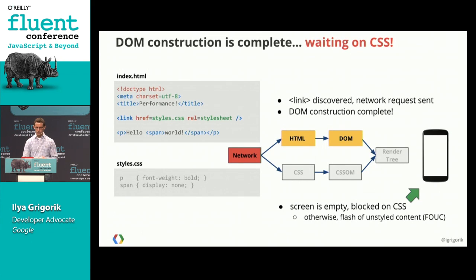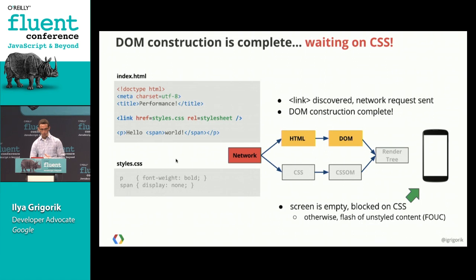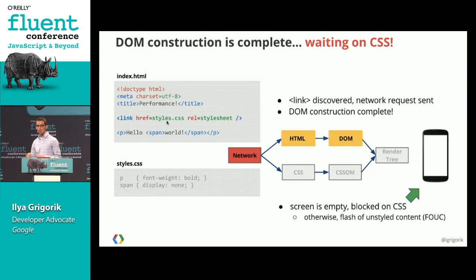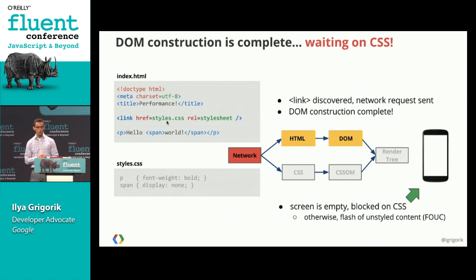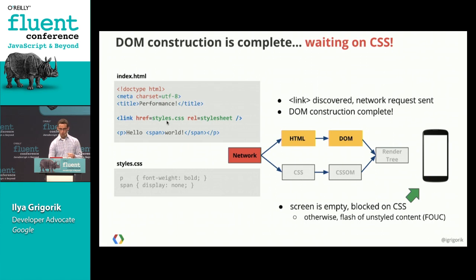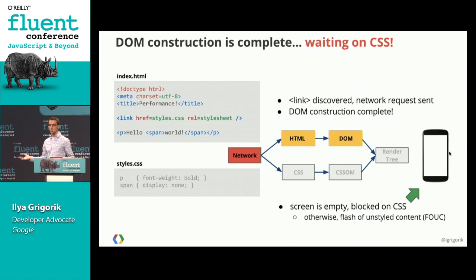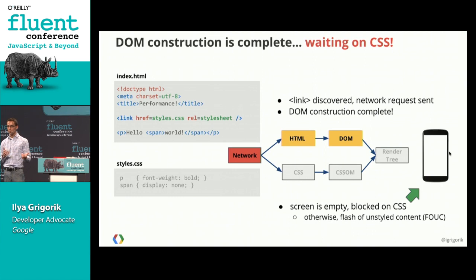Now let's say we got the second packet and discovered the reference to the link tag or stylesheet. Immediately the browser sends that HTTP request for the stylesheet. In the meantime, we can continue to parse the HTML and construct the DOM. At this point we've actually finished the HTML file — we've parsed the DOM and have the object model. But nothing is on the screen yet because we don't have the CSS. What would happen if we rendered the DOM without CSS? You'd get an ugly, unstyled page.